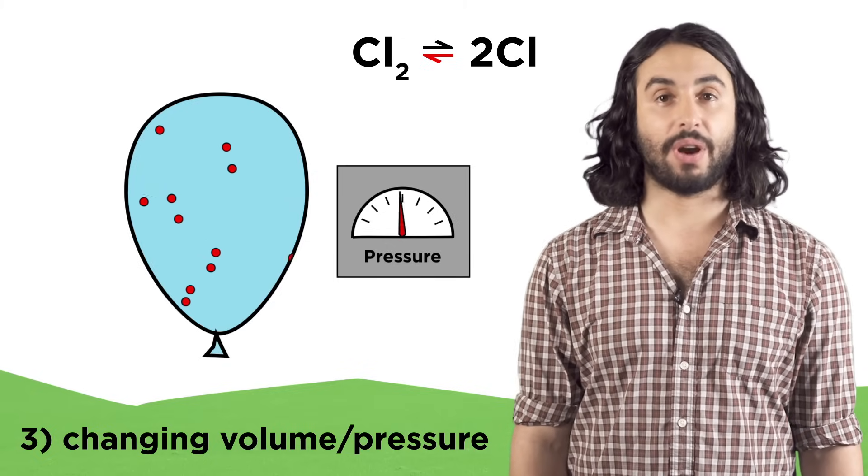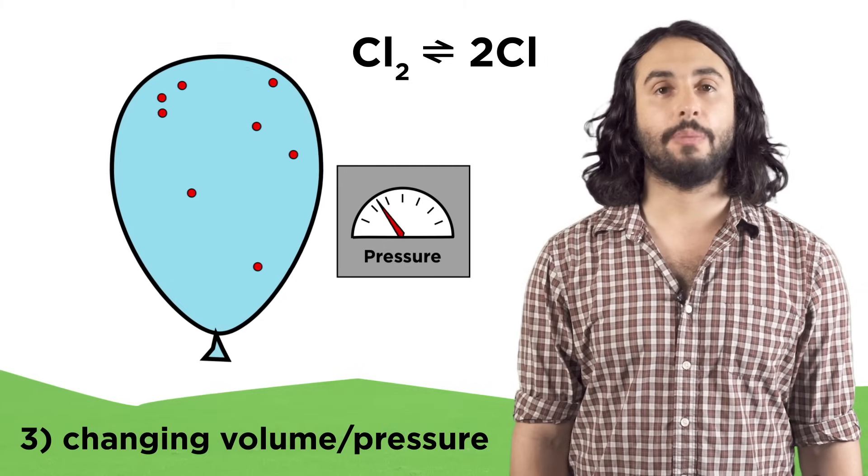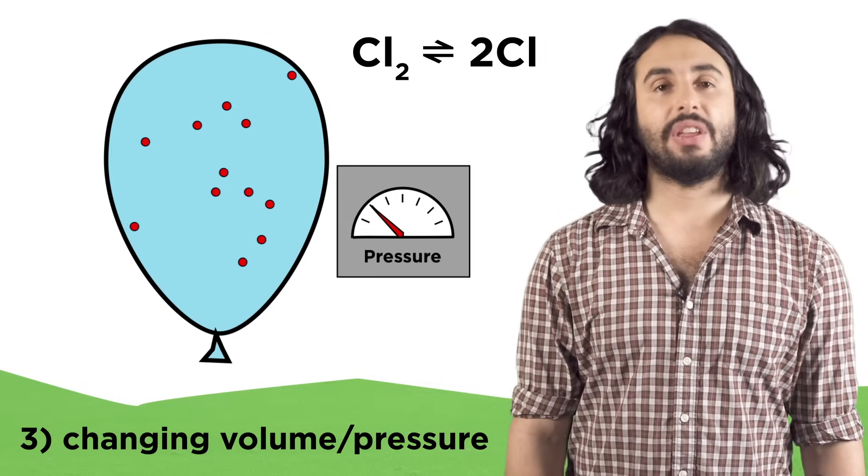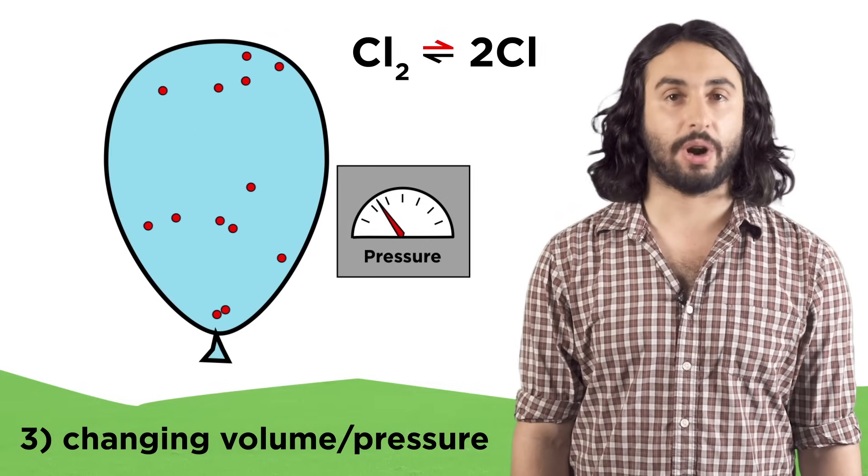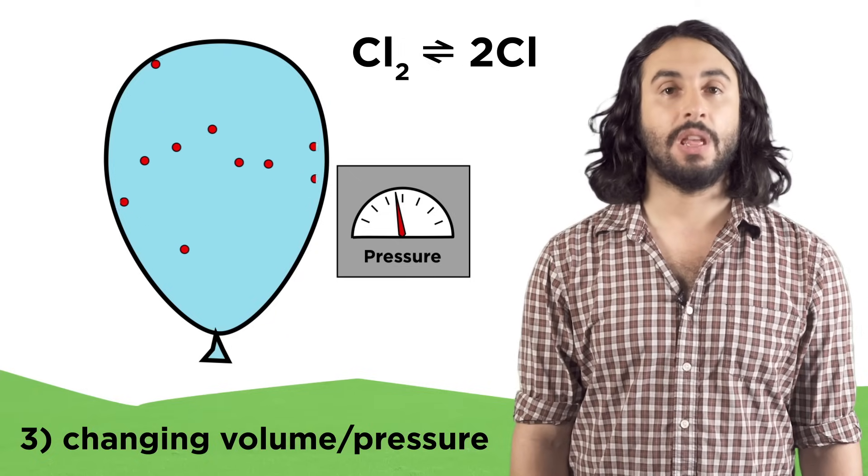If we increase the volume, thereby lowering the pressure, the equilibrium would shift towards the side with more particles in order to regain some of the lost pressure. Let's check comprehension.